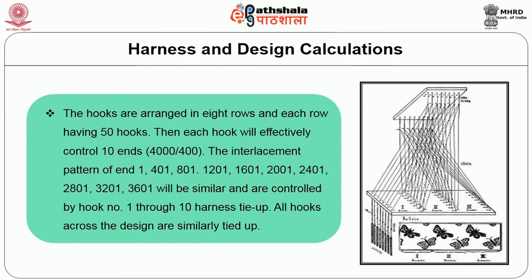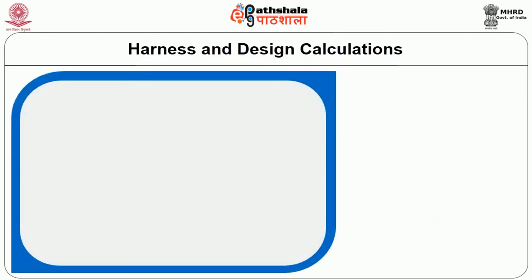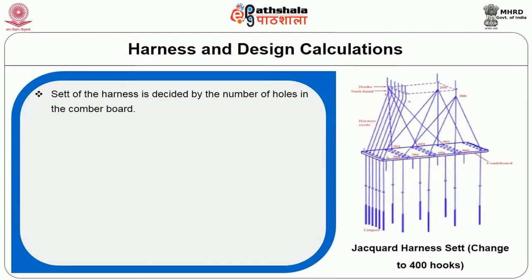Individual harness cords pass through the perforations of the combo board, and dead weights called lingos, which pull the harness cord, are attached to the end of the harnesses. In the figure, you can see the straight and the layover type. The set of the harness is decided by the number of holes in the combo board. Usually, the number of holes in each short row of a jacquard and the combo board are similar, as shown in figure 3.3.